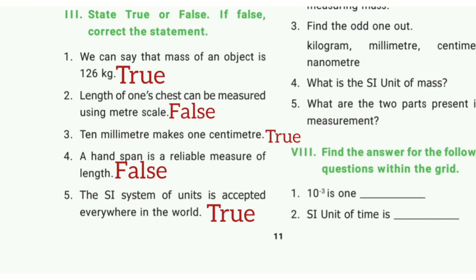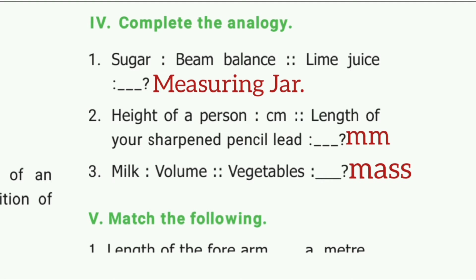Fourth one: A hand span is a reliable measure of length. The answer is false. Fifth one: The SI system of units is accepted everywhere in the world. The answer is true.